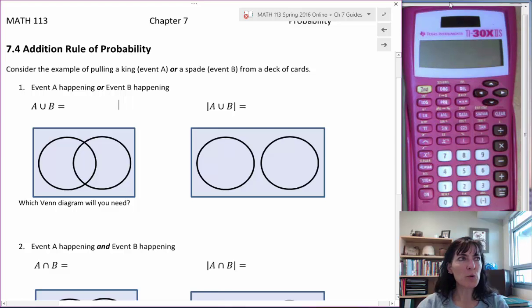7.4 Addition Rule of Probability. Let's review intersections and unions along with the Venn diagrams and cardinal numbers all together.